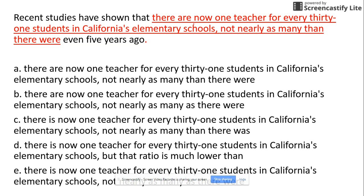So 'there are now one teacher' — the rule says whenever a sentence starts with 'there' as a subject, the verb should agree with the next noun. After 'are', the noun is 'one teacher', so the subject-verb agreement is incorrect. Therefore A is out, and B is out because both have the same problem with 'now one teacher'.